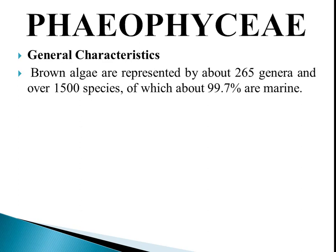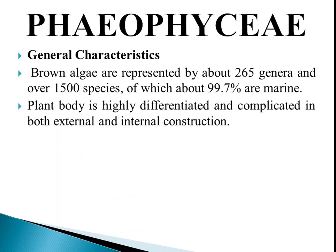Brown algae are represented by about 265 genera and over 1500 species, of which about 99.7% are marine. This group is predominantly found in seas and oceans, with very low freshwater representation.